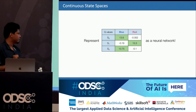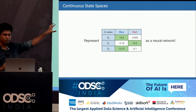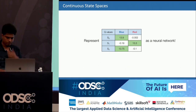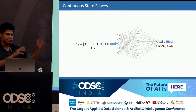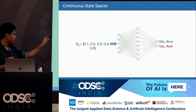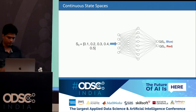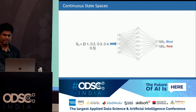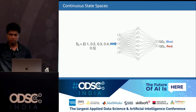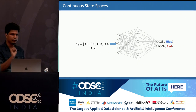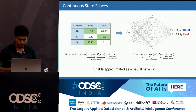We need to adapt Q-learning to handle these real-world use cases. The idea is very simple: represent the Q-table as a neural network. This neural network takes the now-continuous state — a vector of real values — as input and outputs a Q-value for each action. Earlier, to get the best action for each state, we consulted the table; now we consult this neural network to get the best action for each state.